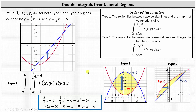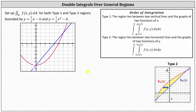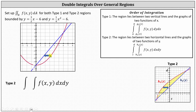Now let's set up the type 2 double integral for the same region. Because we want type 2, the order of integration is first with respect to x, then with respect to y, given by dx dy. This indicates we integrate horizontally first and then vertically. Because we're integrating with respect to x first, the limits of integration must be functions of y, which means we need to solve both functions for x. Notice the region is bounded on the left by the line y equals 3/2 x minus 6.